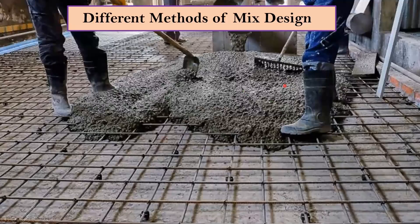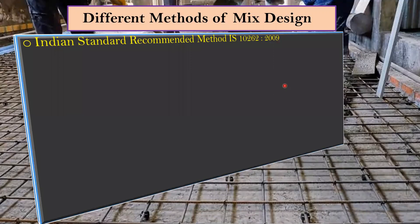Hello learners, in this lecture we will see the different methods of mix design and the entire procedure for preparing a mix design. The first method is the Indian Standard recommended method, IS 10262 — originally 2009 but revised, so make it 2019. This is the new code book.